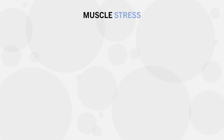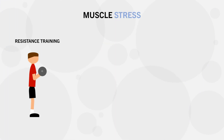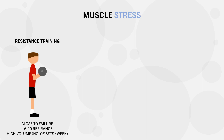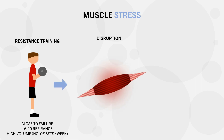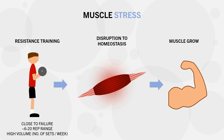First, let's cover some fundamental principles of hypertrophy training. We know that to induce muscle growth we need to stress the target muscle through dynamic resistance training. To do this we basically need to train fairly close to failure in the approximate 6 to 20 rep range with a fairly high number of sets per week. It is this stress that causes a disruption to homeostasis and muscle growth as an adaptation to this stress.